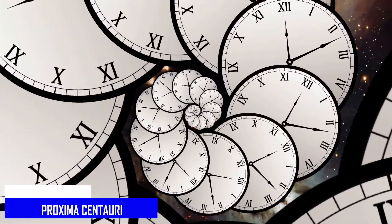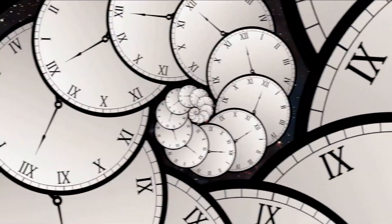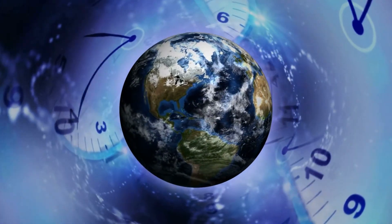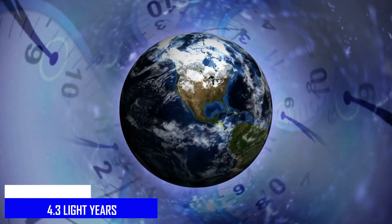The light from Proxima Centauri, our nearest star system, takes 4.3 years to reach us. So Proxima Centauri is 4.3 light years away.